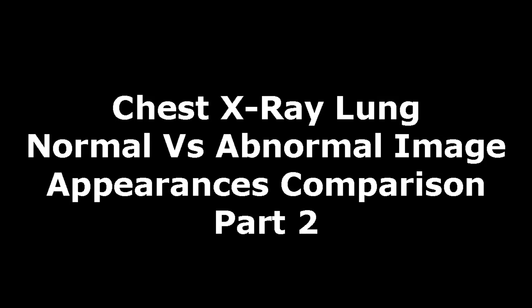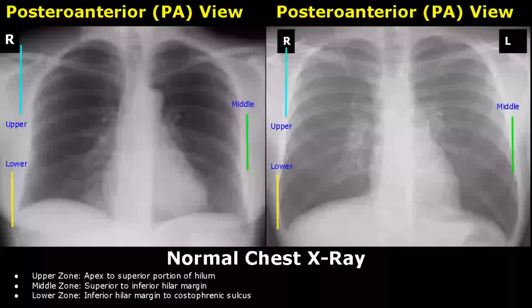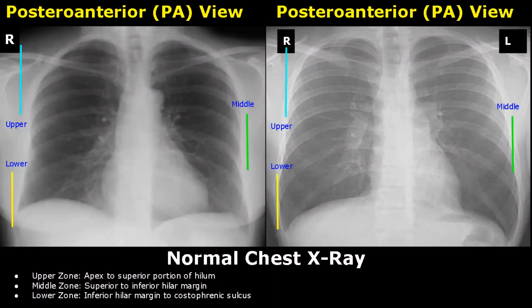Hello everyone, this is Dr. Sam and this is part 2 of chest x-ray lung pathologies. We have finished x-ray appearances of tuberculosis, pneumonia, and atelectasis in part 1. Now we will see more lung pathologies in this video.